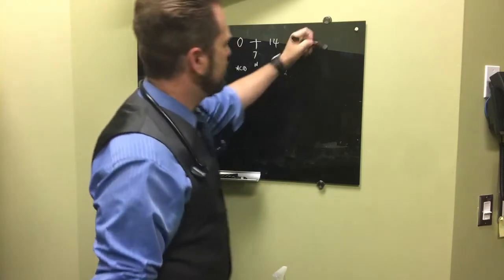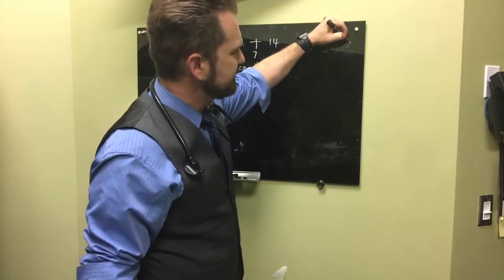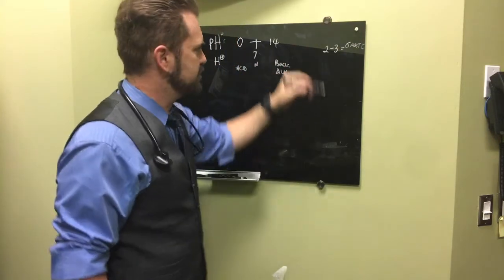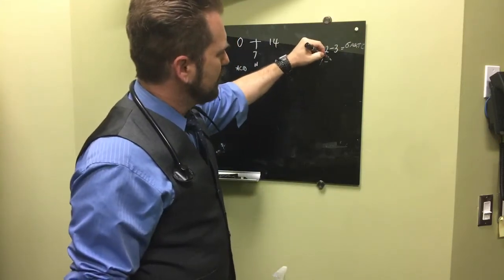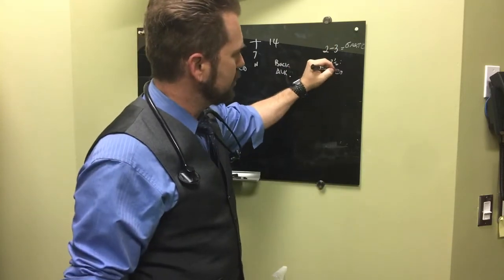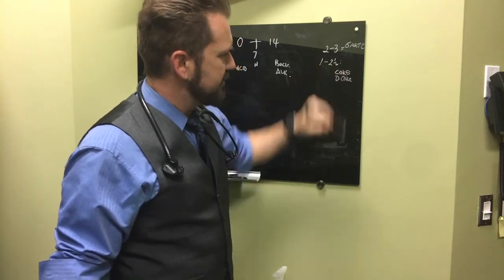A couple things to know: somewhere between 2 to 3 is our gastric or stomach content pH. Somewhere between 1 to 2.5 are things like dark soda like Coke, Diet Coke, and most dark soda with phosphoric acid.